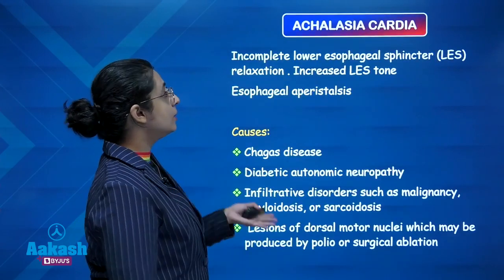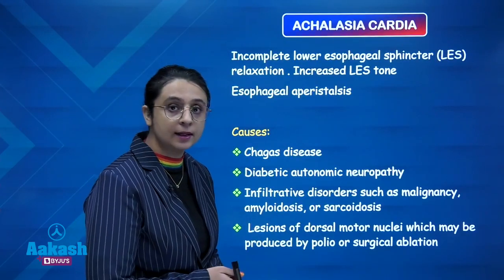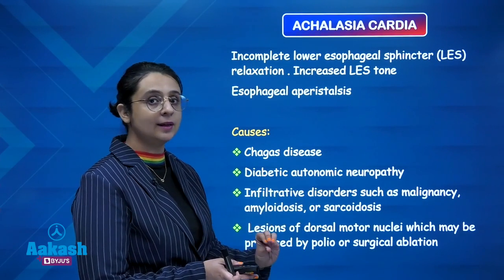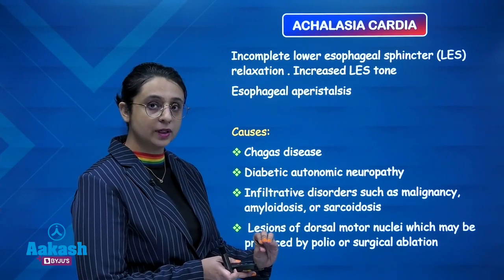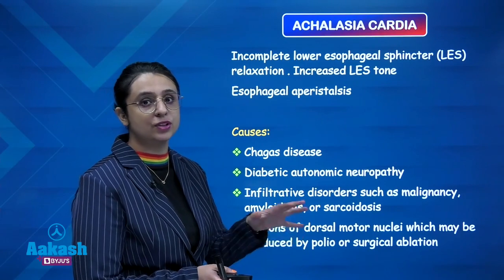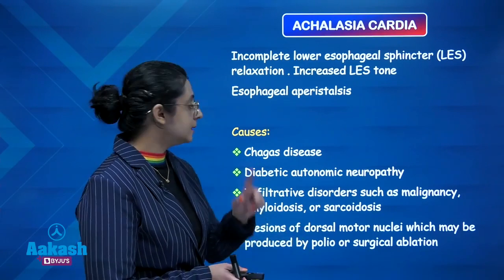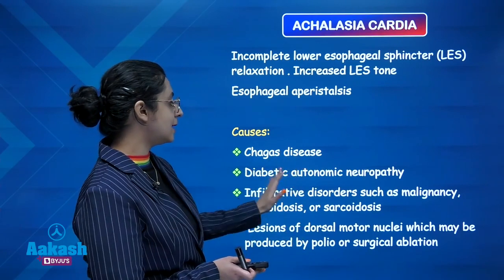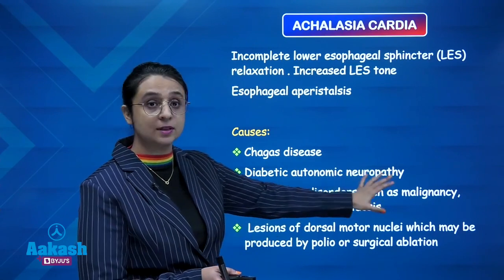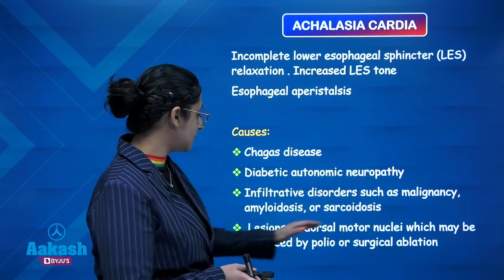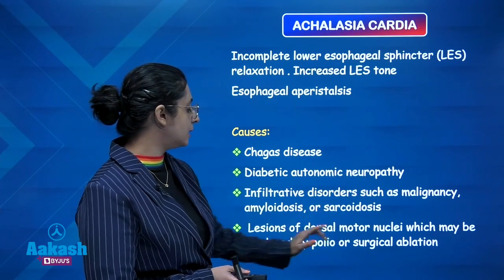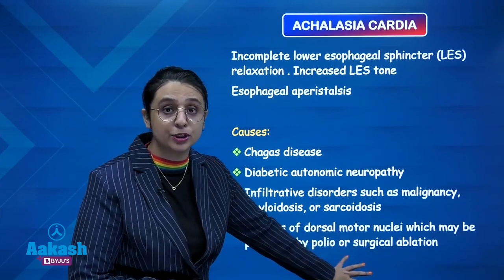We will first study achalasia cardia. This is the condition characterized by incomplete relaxation of the lower esophageal sphincter, or increased tone present in the lower esophageal sphincter. This can be due to Chagas disease, diabetic autonomic neuropathy, infiltrative disorders such as malignancy, sarcoidosis, and lesions of dorsal motor nuclei due to polio or surgical ablation.